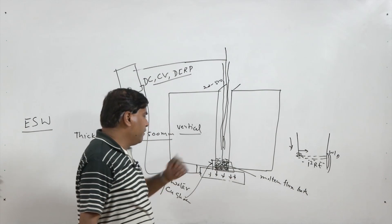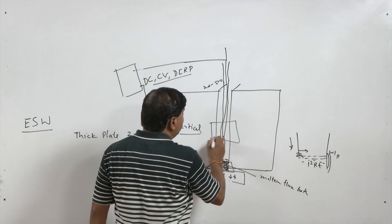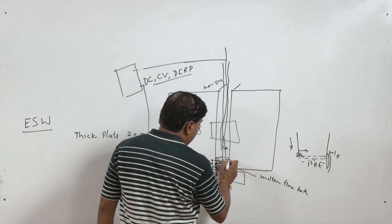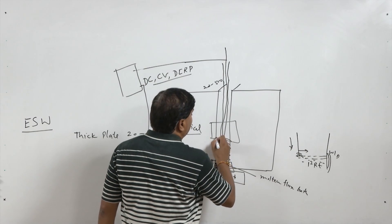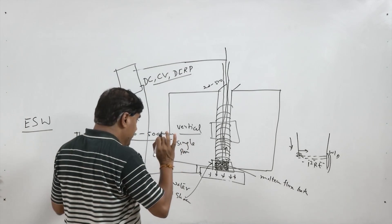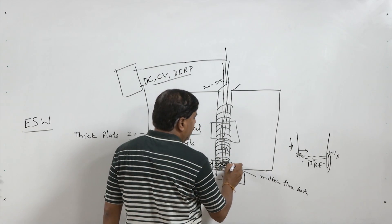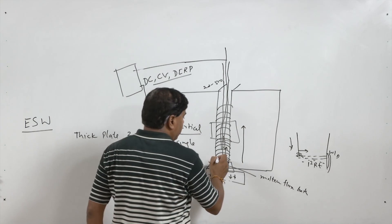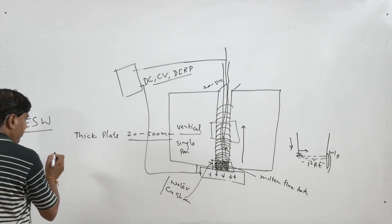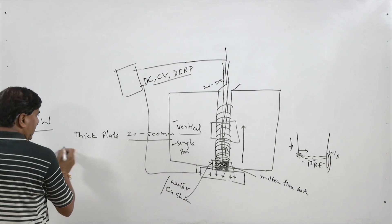Solidification gradually proceeds, and as it does, the entire welding head starts moving up so that the welding process completes. The entire length of the weld is completed in one go — this is a single pass, vertical uphill weld, because welding starts from the bottom and continues in the upward direction. The joint is completed in a single pass.